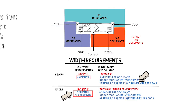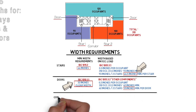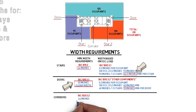Now what about the corridors? Let's start with the minimum widths required by the code. This can be found in IBC section 1020.1.2, which contains a table. You have to determine what type of use your floor has — in our example this floor is used for office. Based on the table, we need a minimum of 44 inches clear for our corridor.